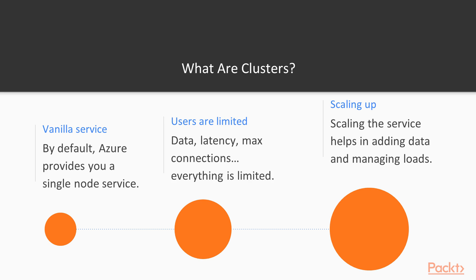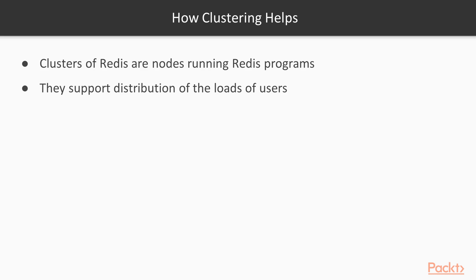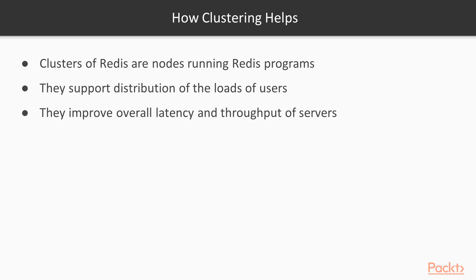A cluster contains different nodes of the service running individually and maintaining the load of the application data. In the Redis environment, clusters are basically the nodes or servers in the Azure infrastructure that run the Redis program. The benefit that a Redis cluster provides us is that we can easily distribute the loads of the servers, users, and data across all the nodes individually. The end result is that latency decreases and throughput increases, because each individual server is responsible for handling a partition or a percentage of the data and traffic.